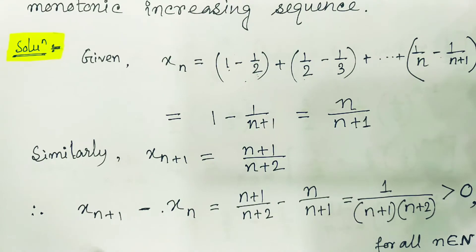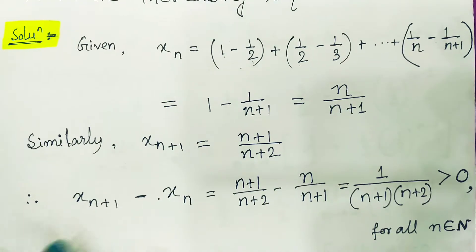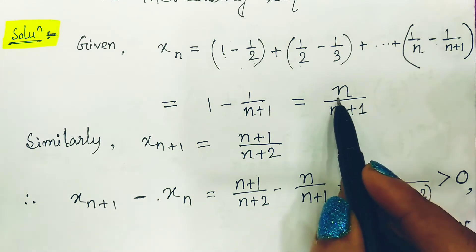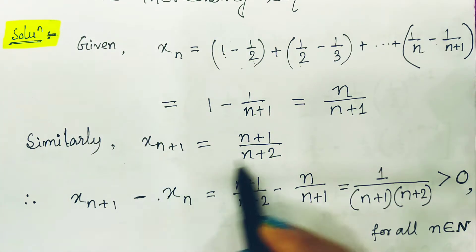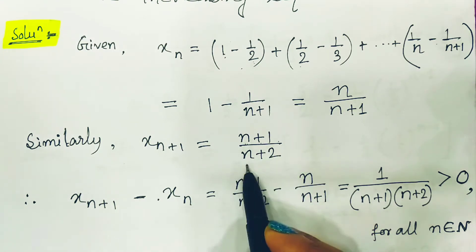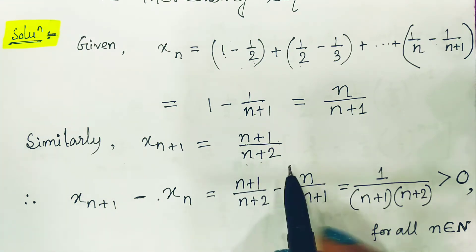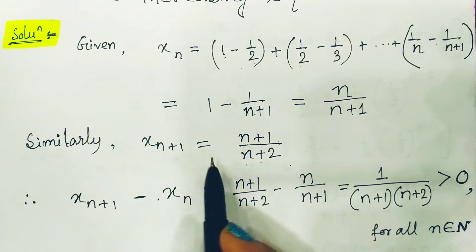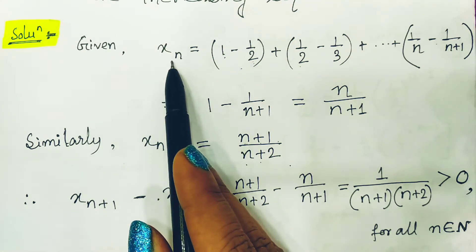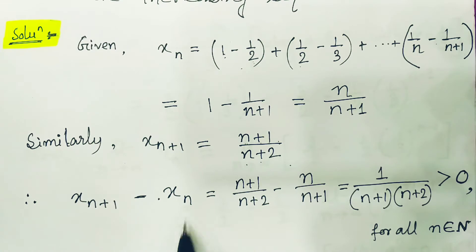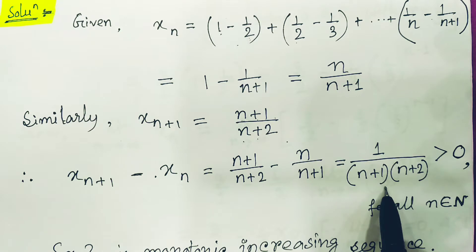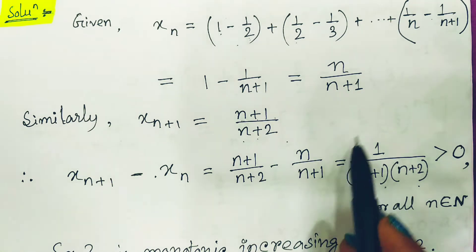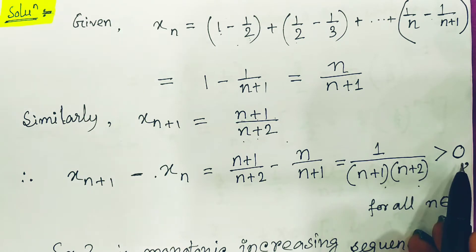Similarly, substituting n+1 for n, we find xn+1 = (n+1)/(n+2). Taking the subtraction of xn+1 minus xn, we find it equals 1/((n+1)·(n+2)).